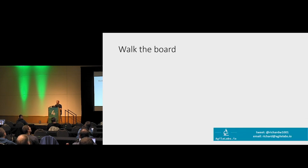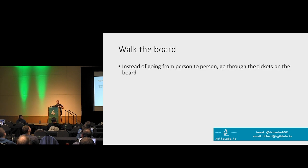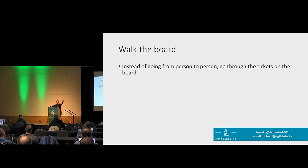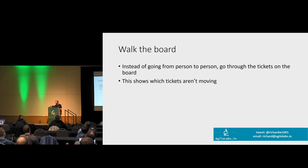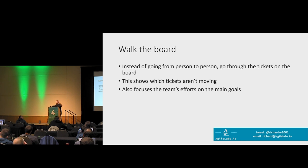Walking the board is another easy hack. Most teams end up having people standing in a circle going one by one, which is very much about the people and can make people feel like they're having to justify themselves. Switch and just make it about the work instead: 'here's our top goal, what happened on that one?' Multiple people might speak to that goal. It changes the dynamic completely at no cost. You can also instantly see if there are tickets not moving — it's much clearer on a ticket-by-ticket basis than person-by-person.